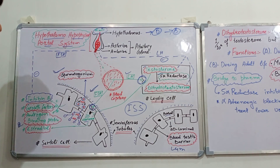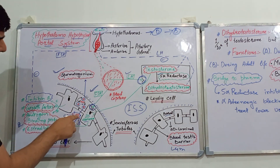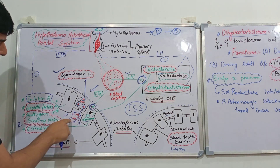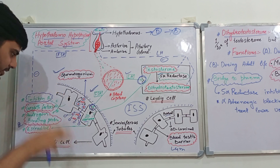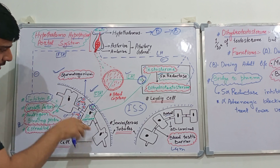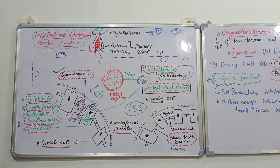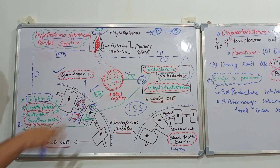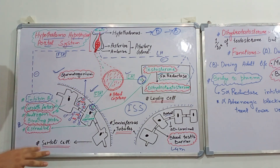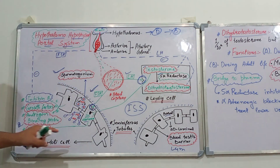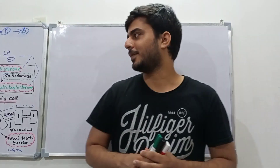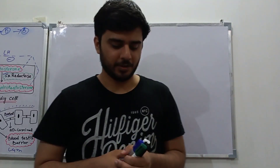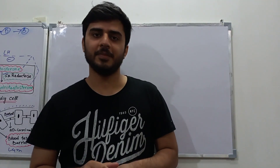After meiosis they divide further to form four spermatids, which attach to the wall of the seminiferous tubules. Testosterone and growth factors then act on them to form mature spermatozoa. That covers everything about male reproductive endocrinology. In our next lecture we will discuss the female reproductive system.